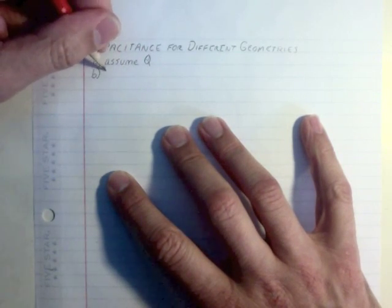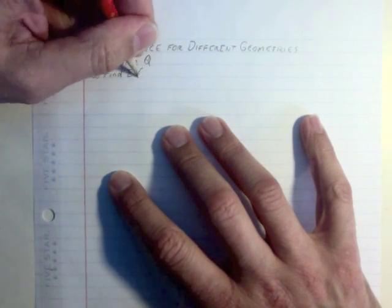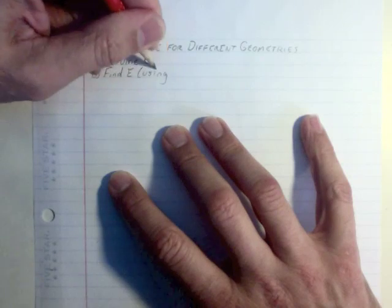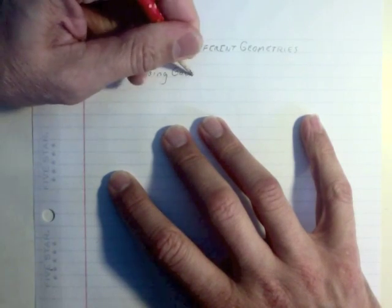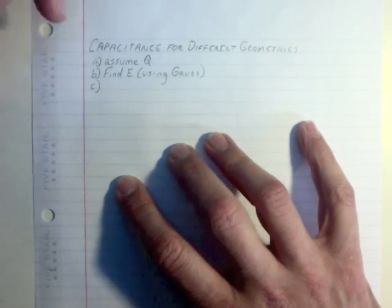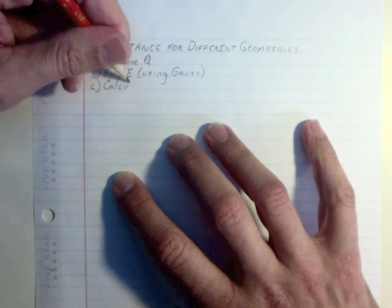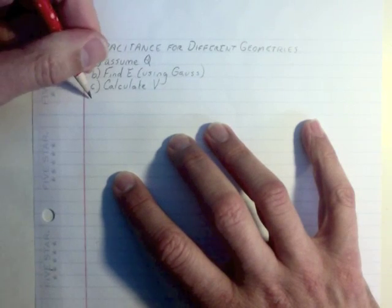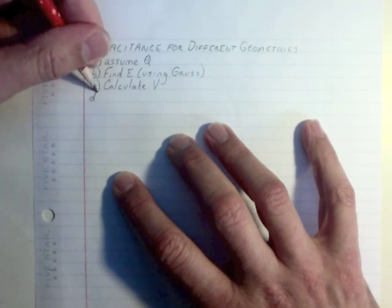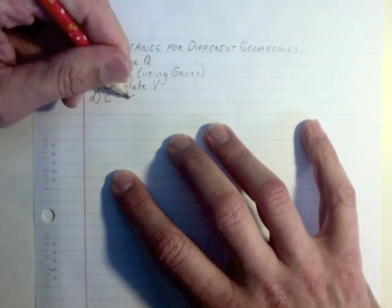The second is find E field, and I'm going to say using Gauss's law, that's usually the way we do it. And then C, knowing E, calculate V. So we're going to be integrating over that E field. And then finally, C equals Q over V.